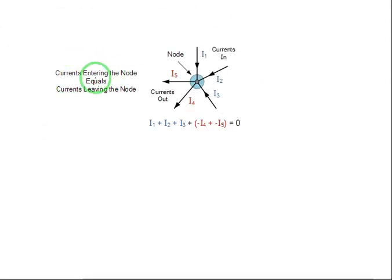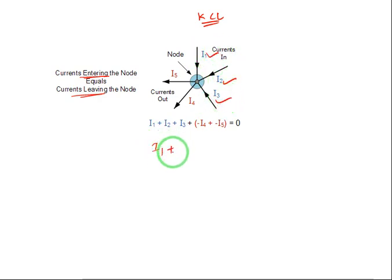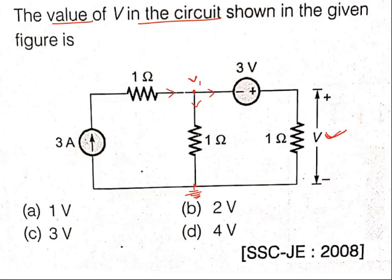Here, current entering equals current leaving. I1, I2, and I3 currents are entering, so you can write I1 plus I2 plus I3 equals I4 plus I5. Applying the same formula to this circuit: the 3 amp current is entering, and let I1 and I2 be the currents leaving. So 3 equals I1, where I1 equals V1 divided by 1.